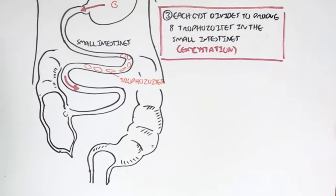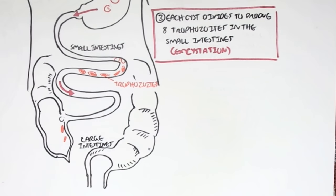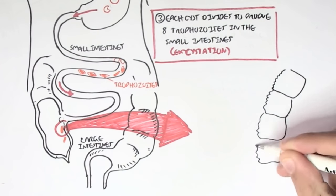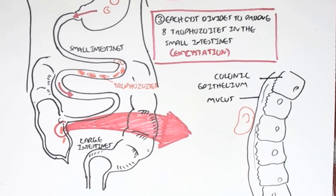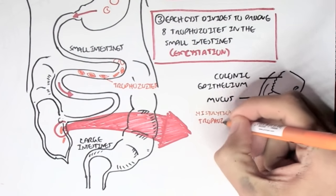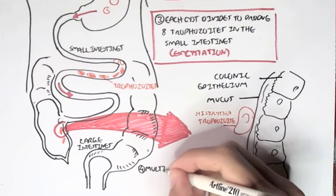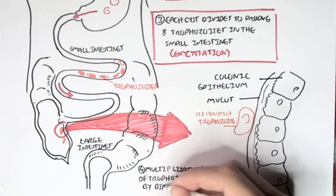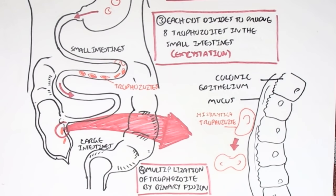Let's zoom in and see what happens in a non-invasive infection. Here is the colonic epithelial cells of the large intestines. Here we have the mucus layer covering these epithelial cells. The histolytica trophozoites will essentially be on the surface of this mucus and begin multiplying by binary fission.